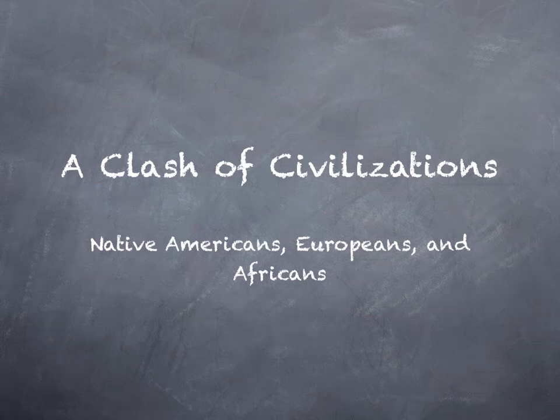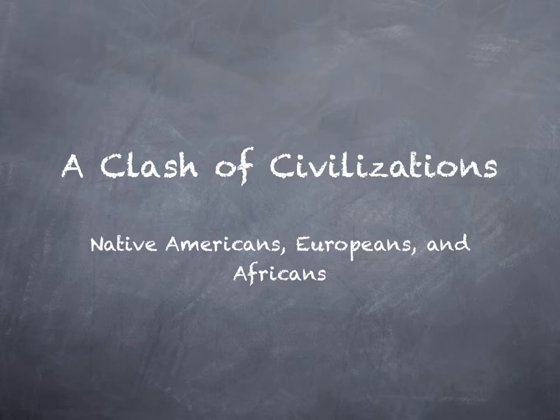We'd like to begin our study of the United States by looking at three distinct civilizations that came together in the very beginning of the history of this area that we call the United States. Those civilizations came from different parts of the world: the Native Americans who were here originally, the Europeans, and then the Africans. It's these civilizations coming together that formed the unique society and culture that today we call the United States.